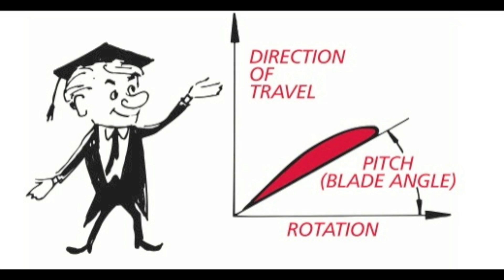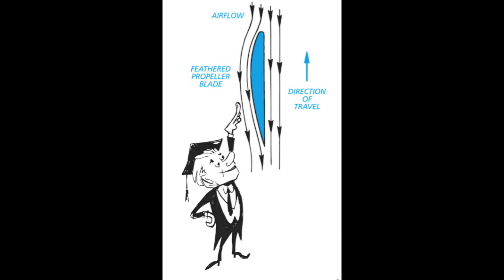To further simplify our discussion, since changing the blade angle directly changes the pitch, I will use the term pitch to mean changing the blade angle for the remainder of the discussion. Any time we change the blade angle of the propeller, we are changing the pitch of the propeller. We will be discussing propellers used on most general aviation airplanes, which are non-feathering. Look for a discussion on full-feathering propellers in an upcoming episode.